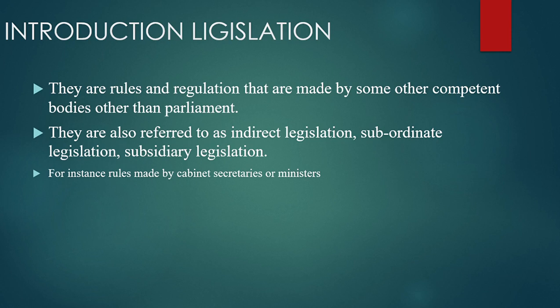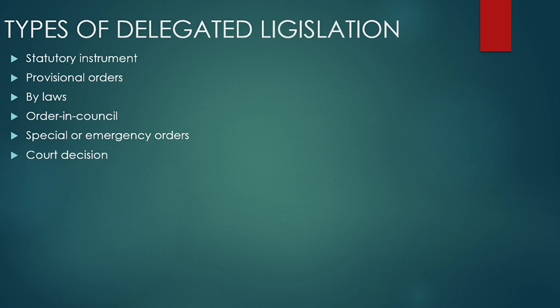For instance, they encompass the rules made by cabinet secretaries, also known as ministers, and they form the basis of delegated registration. There are various types of delegated registration: statutory instruments, provisional orders, by-rules or rules made by county governments or states, orders in council, and special and emergency orders or court decisions or court orders.